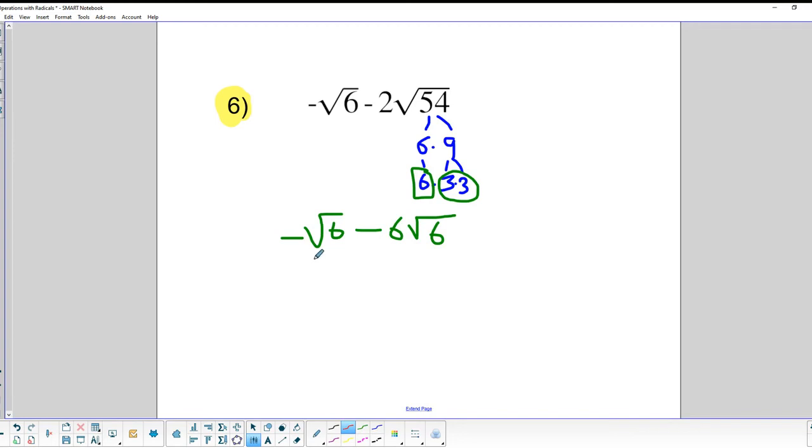We've got two terms that are the square root of 6 here. The first one is just negative 1 square root of 6, and then we have minus 6 square roots of 6. So negative 1 minus 6 equals negative 7. My final answer here then is negative 7 square roots of 6. So that's problem number 6.